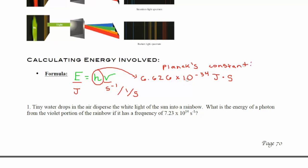Now what I'm going to do is do one of the practice problems, and then I'm going to assign another practice problem for you to do. So in this first example, it tells me that tiny water drops in the air disperse the white light of the sun into a rainbow. That's actually a continuous spectrum. What is the energy of a photon from the violet portion of the rainbow if its frequency is 7.23 times 10 to the 14th? So my equation is energy equals Planck's constant times frequency. I'm looking for my energy, so I'm going to put it right here. Notice how I'm showing all of my variables.